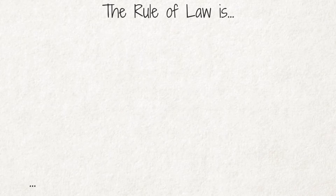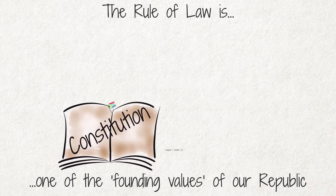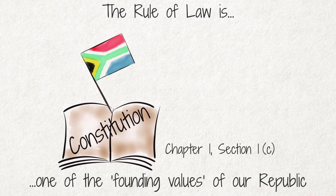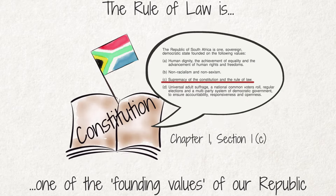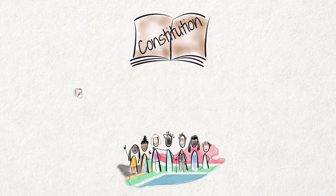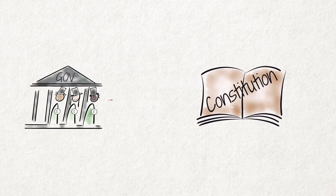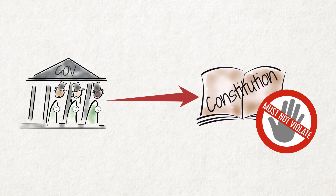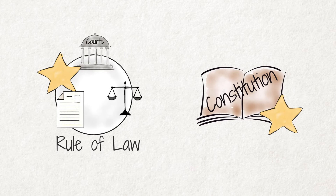The Rule of Law is one of the founding values of our Republic. Chapter 1, Section 1c of the Constitution says that the Republic of South Africa is founded on the supremacy of the Constitution and the rule of law. This means that the Constitution is the highest law of the land and no other law may conflict with it, nor may the government do anything that violates it, and that the Rule of Law is as supreme as the Constitution itself.